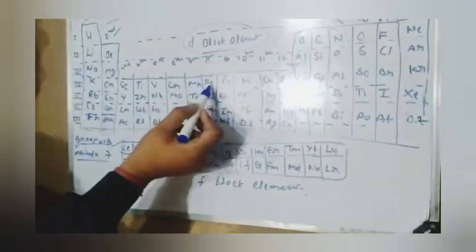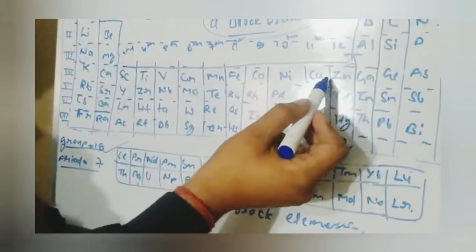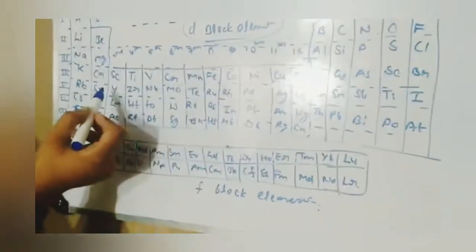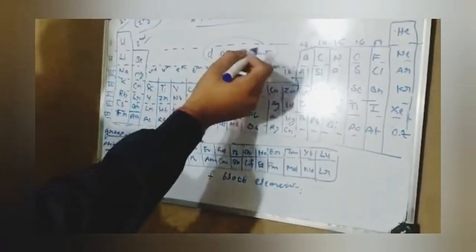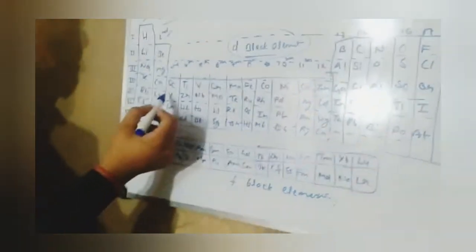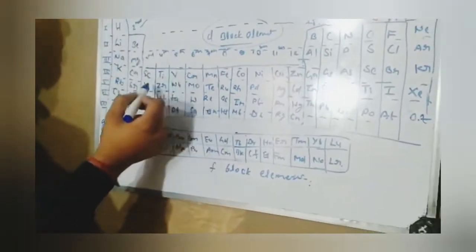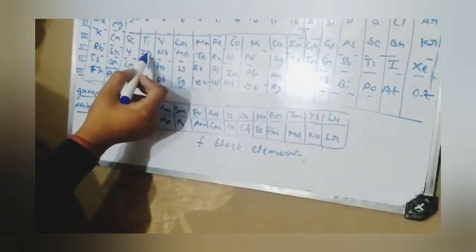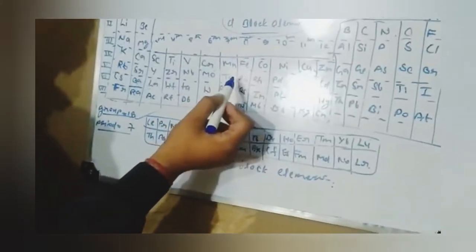Now we have a trick for D-block elements. There are four series in the D-block series. This is the first series of D-block elements, second series of D-block elements.